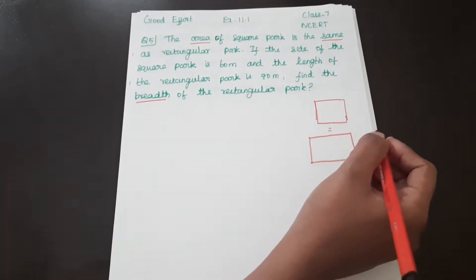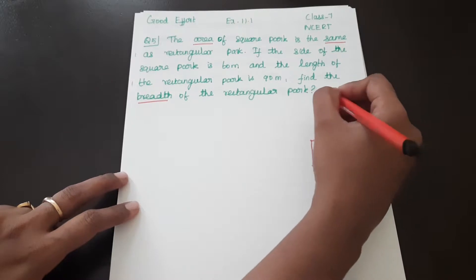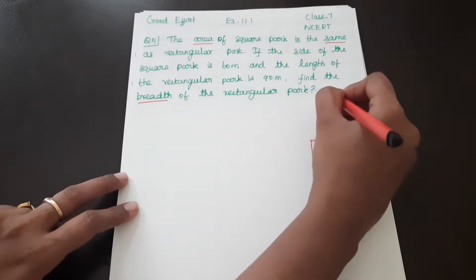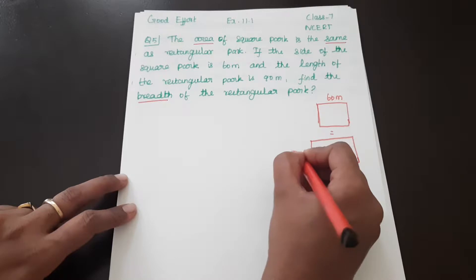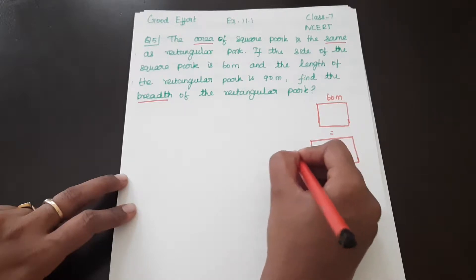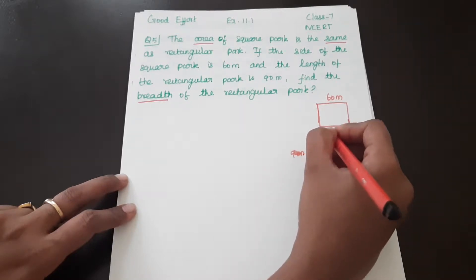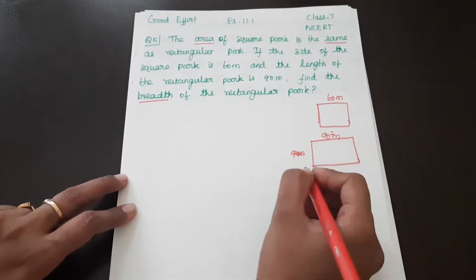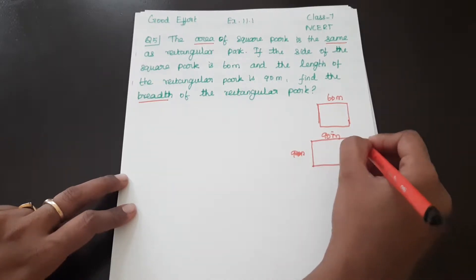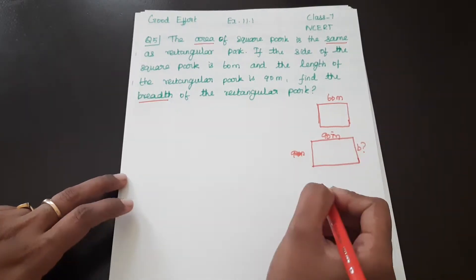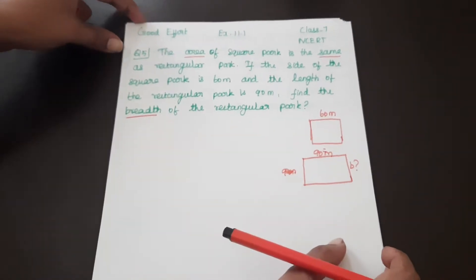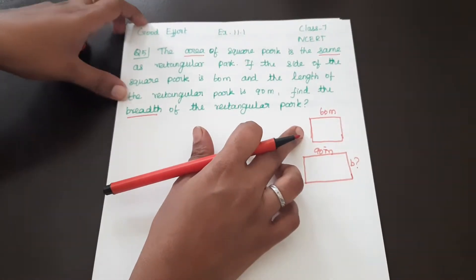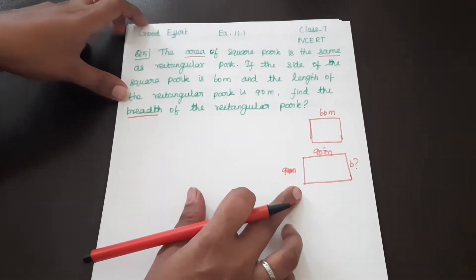The square park's side is 60 meters. The rectangular park's length is 90 meters. We need to find the breadth, so the area of the square park equals the area of the rectangular park.